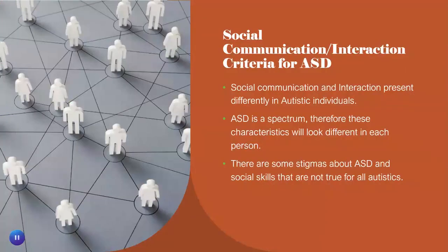The social communication and interaction criteria for ASD are that social communication and interaction are going to present differently in autistic individuals. You will see differences in all individuals who are diagnosed with ASD, because that is one of the criteria from the DSM and the CDC's definition of autism — that they should have different struggles in social communication and interaction.